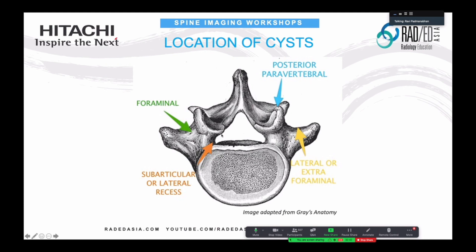A cyst can go into the subarticular recess — which is basically within the canal — it can sit in the foramen, it can be in the far lateral or extra-foraminal region meaning outside the foramen, or you can get posterior paravertebral cysts. The importance of this is that depending on where the cyst is sitting, a different nerve root will be affected.